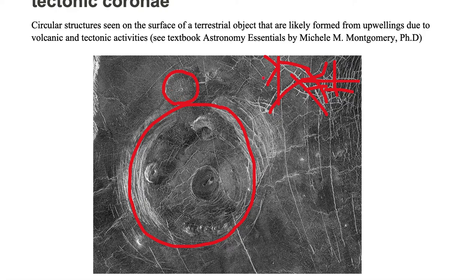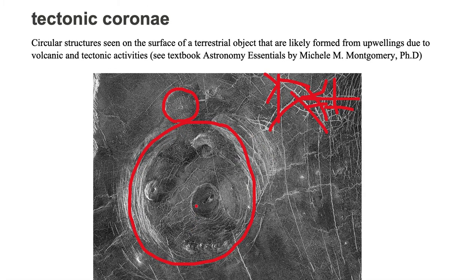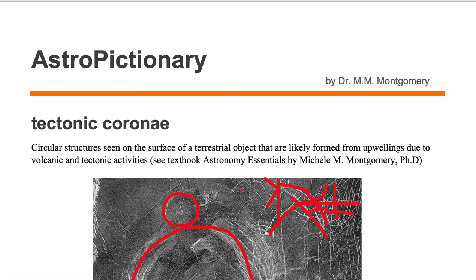The volcanic feature is the dome, the tectonic feature is this cracked structure, and the corona is the one in the center — the circular structure associated with the dome and the cracked surface. All of this is likely formed from volcanic and tectonic activity.